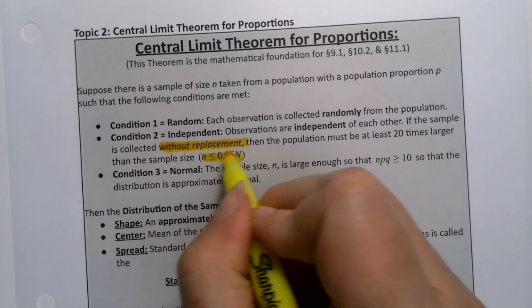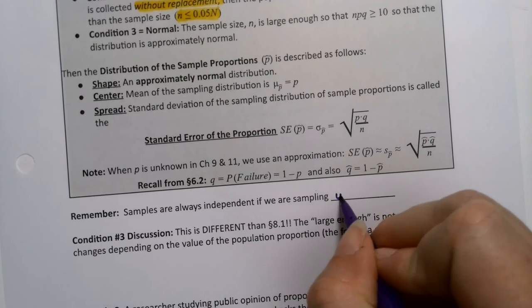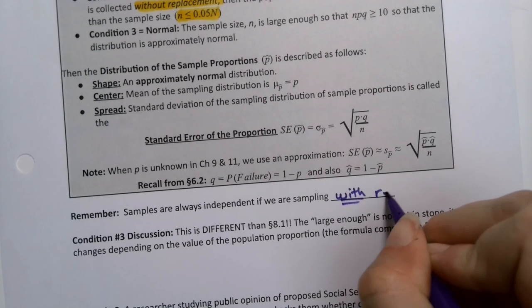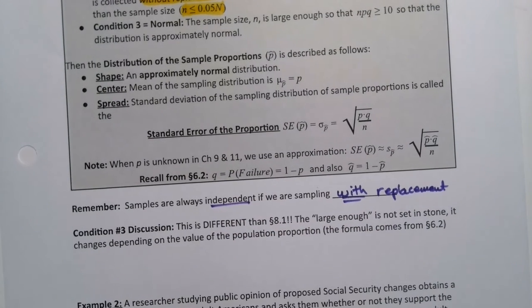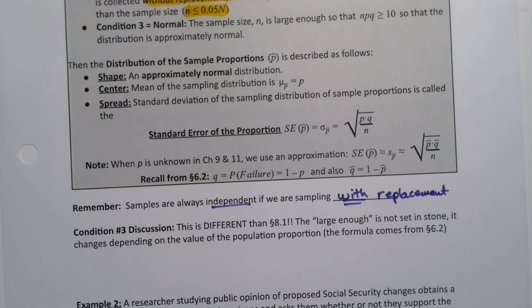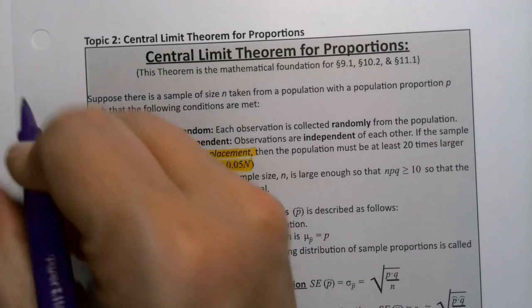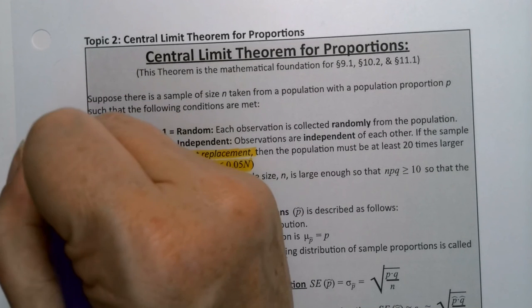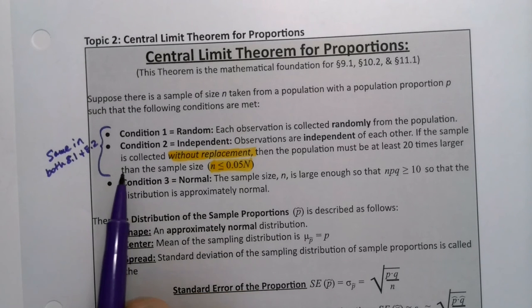If you're sampling with replacement, then it's automatically independent and you don't have to worry about it. So that's just a little remember. Remember that if you're sampling with replacement, you got no problems. Everything's automatically independent. So these two pieces are the same. I can actually make a note. They're the same in both 8.1 and 8.2. The condition 1 and condition 2.